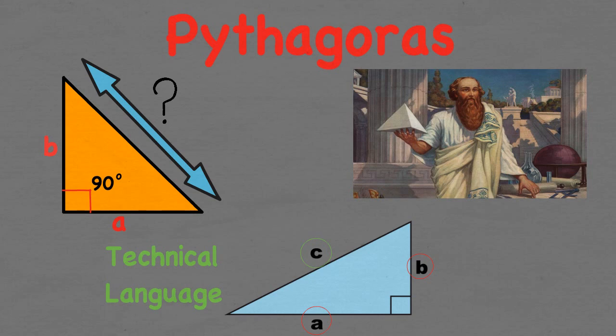Pythagoras realised that if you have a right angle triangle and you square the lengths of the sides that make up the right angle A and B and add them together you get the same number you would get by squaring the other side, the hypotenuse.